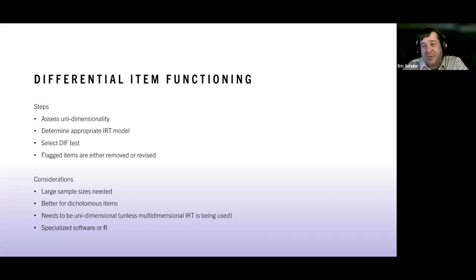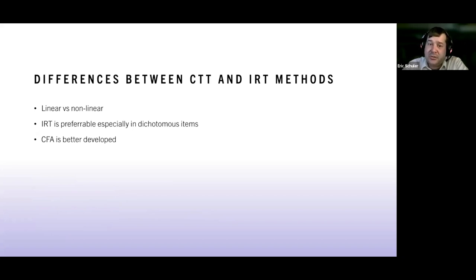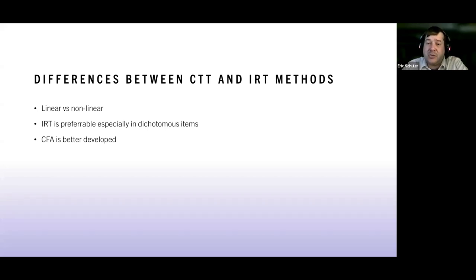Some differences between classical test theory approaches (MIMIC and measurement invariance) and IRT: classical test theory assumes a linear relationship, whereas IRT is non-linear. IRT is better for dichotomous items like yes/no or correct/incorrect, whereas MIMIC and measurement invariance work better for Likert scaling and are better developed for CFAs. Those are some different things to consider as you decide which to use.